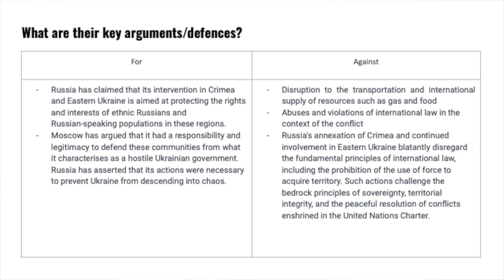Moscow has also cited security concerns as a reason for its actions in Ukraine. It views the expansion of Western institutions like NATO and the European Union into Ukraine as a direct threat to Russian security, leading to a more assertive Russian stance.